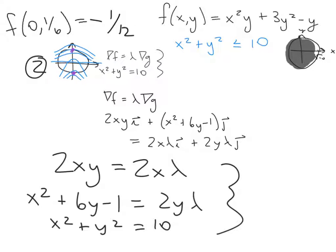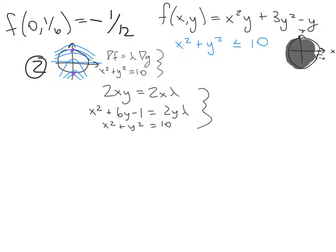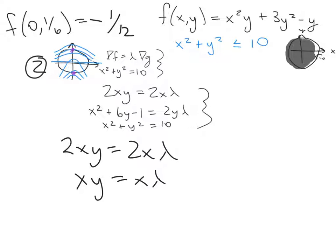Now we simplify the system. The first equation, 2xy = 2xλ, simplifies to xy = xλ. This holds either when x = 0 or when y = λ. It's tempting to divide out by x, but we can't do that if x = 0 — that's a special case we must consider separately.